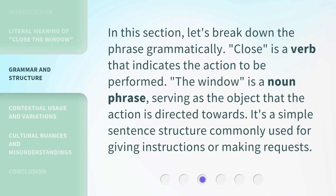Let's break down the phrase grammatically. Close is a verb that indicates the action to be performed. The window is a noun phrase, serving as the object that the action is directed towards. It's a simple sentence structure commonly used for giving instructions or making requests.